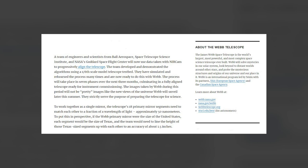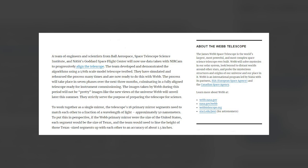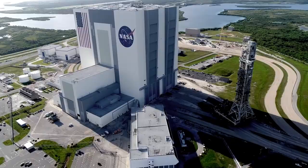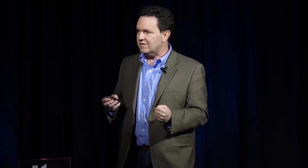To put this in perspective, if the Webb primary mirror were the size of the United States, each segment would be the size of Texas. And the team would need to line the height of those Texas-sized segments up with each other to an accuracy of about 1.5 inches. Scott Acton and Chanda Walker of Ball Aerospace, along with Lee Feinberg of NASA Goddard, walk through the steps to make this happen.